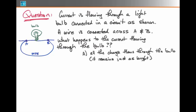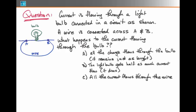Is it the case that all the charge now continues to flow through the bulb just as it was before, i.e. it remains just as bright? Does the bulb get half as bright or half as much of a current flow? Or does all the current now pass through the wire?